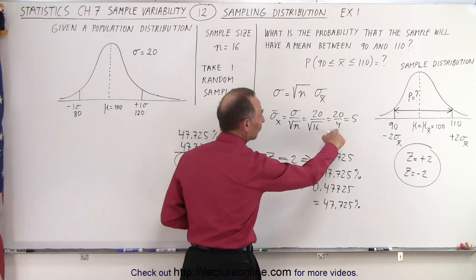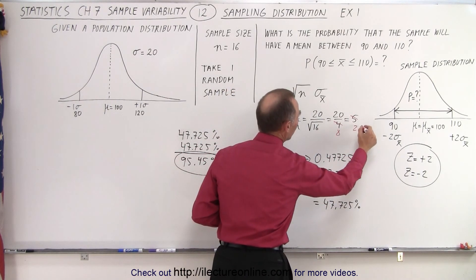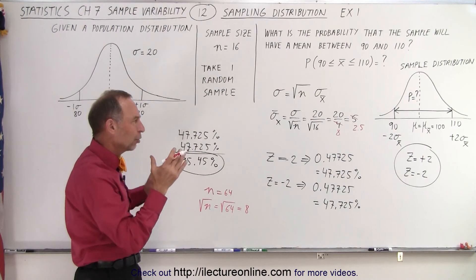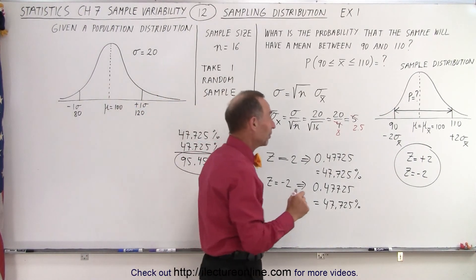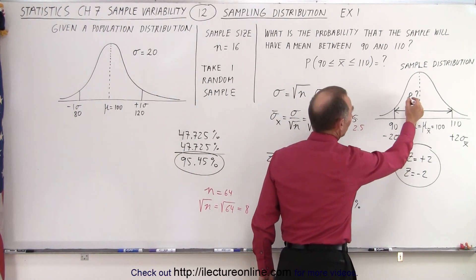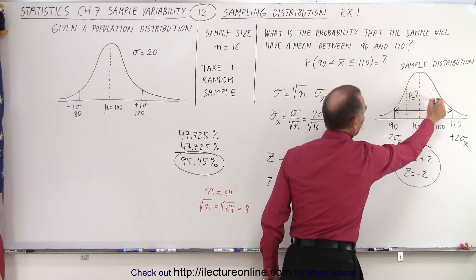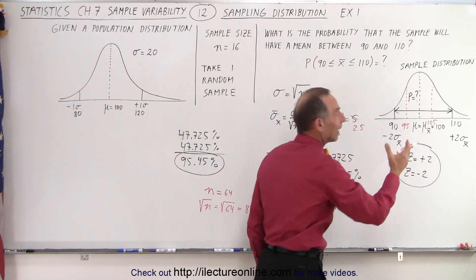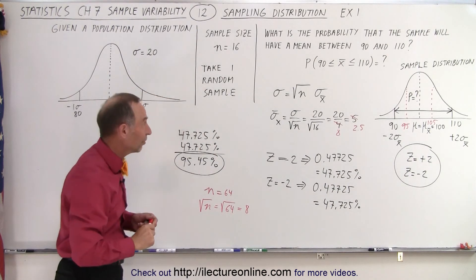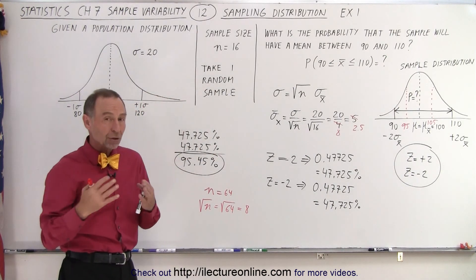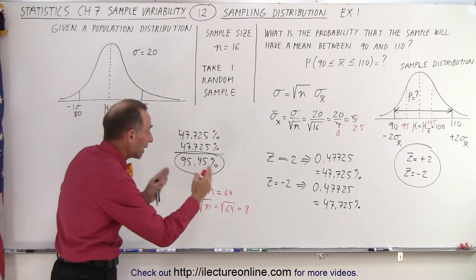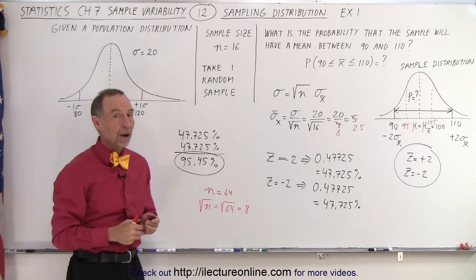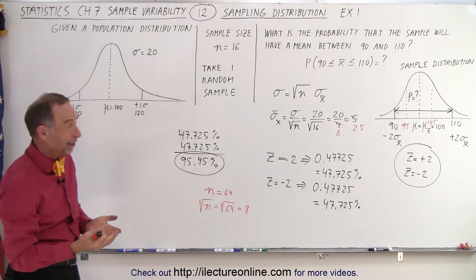If we divide by 8 instead of 4, we get 2.5 as the standard deviation of the sample distribution. With a smaller standard deviation of the sample distribution, we have the same percent probability of falling within a shorter range — between 95 and 105 instead of 90 and 110. So with larger sample sizes, the mean of that one sample will more likely fall closer to the mean of the entire population, and that is how it's done.